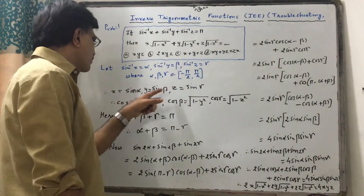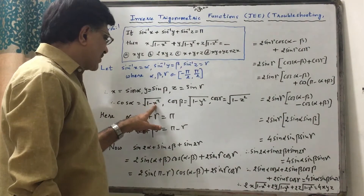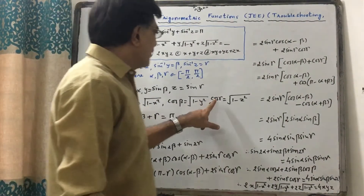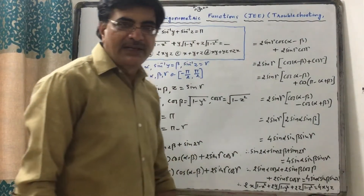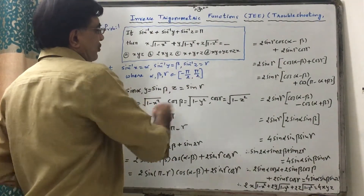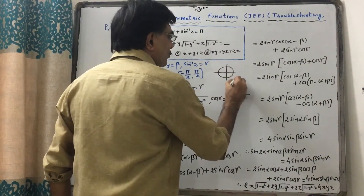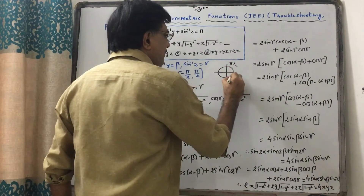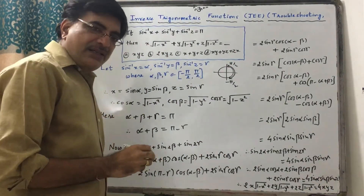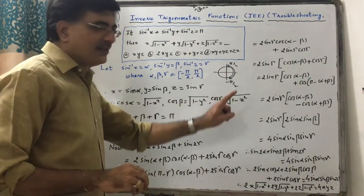We know that cosα = √(1 − sin²α) = √(1 − x²). Similarly, cosβ = √(1 − y²) and cosγ = √(1 − z²). Since the range is [−π/2, π/2], the angle is in either the fourth or first quadrant. In both quadrants, cosine is positive, so we take it as is.